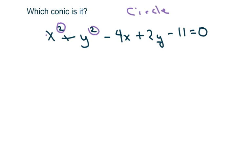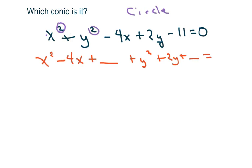We get x squared minus 4x — I'll put a line here — plus y squared plus 2y, with a line here, equals negative 11. Then we complete the square: take half of 4, which is 2, squared gives 4 — so add 4. Half of 2 is 1, squared is 1 — so add 1 to both sides.